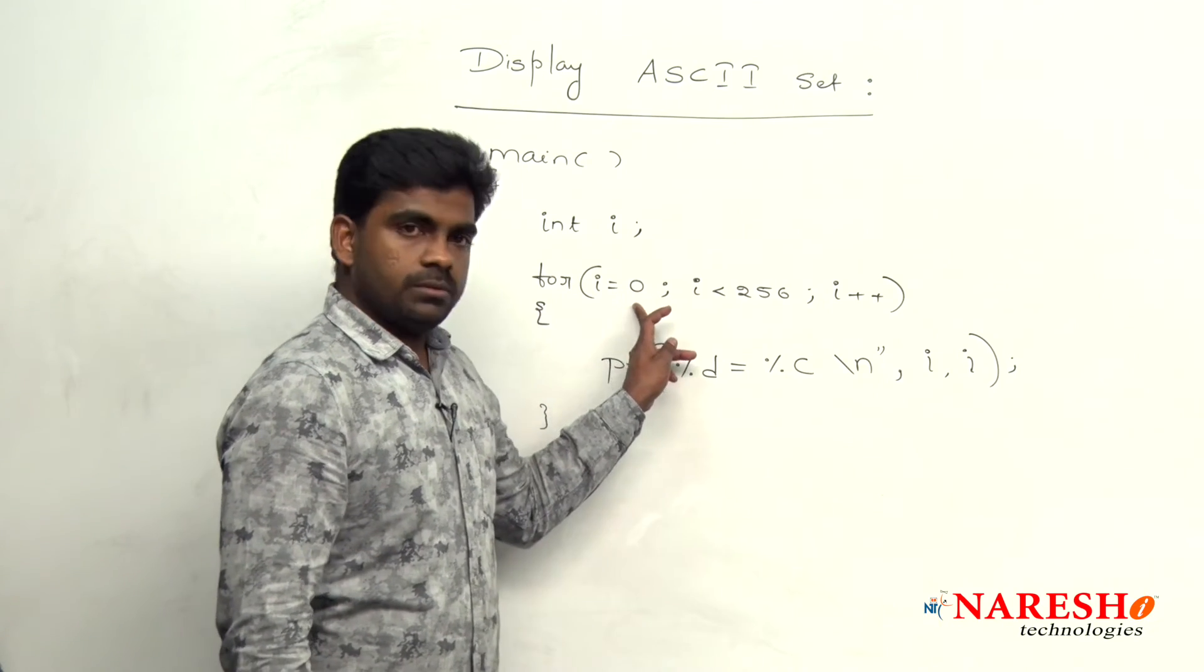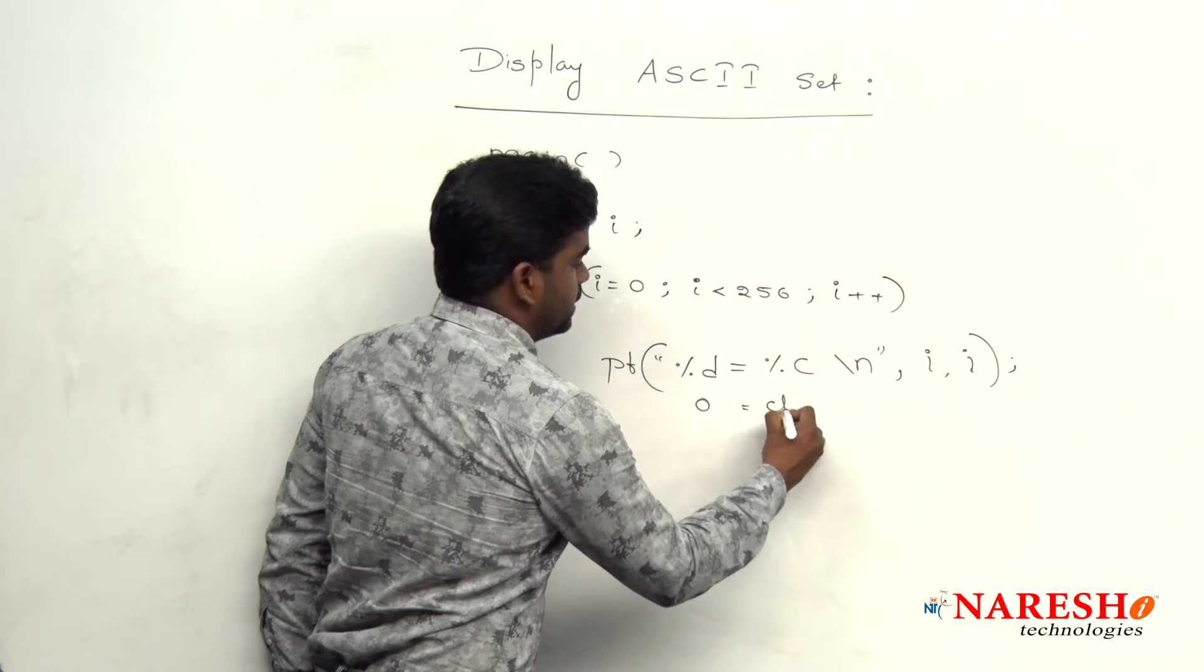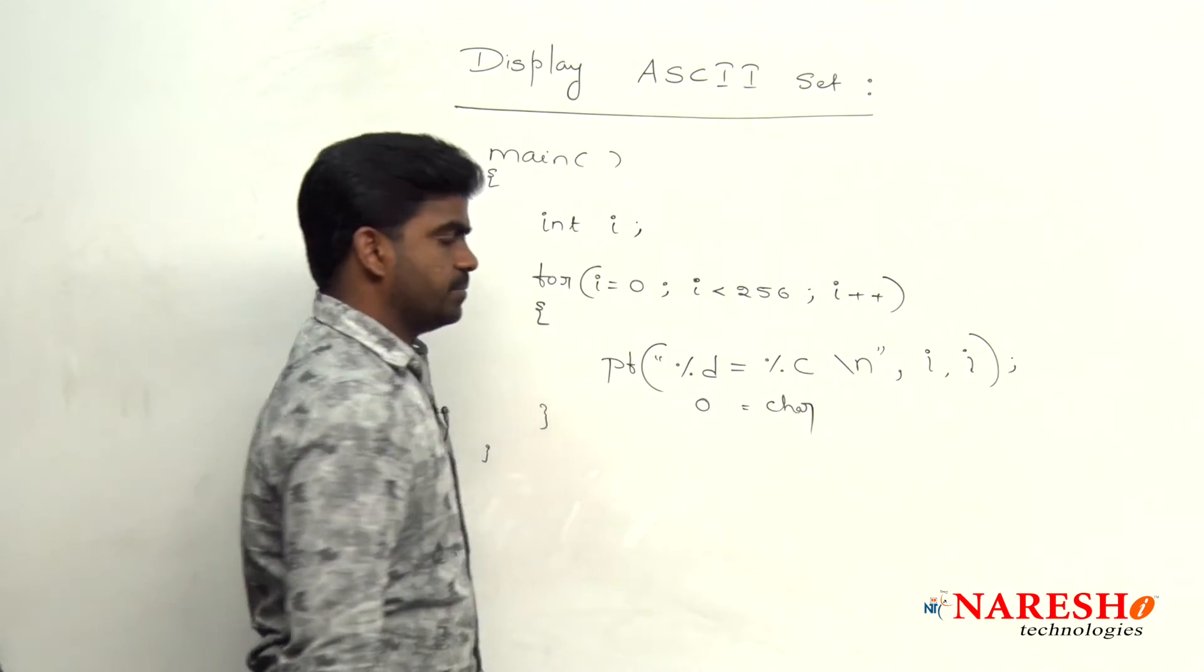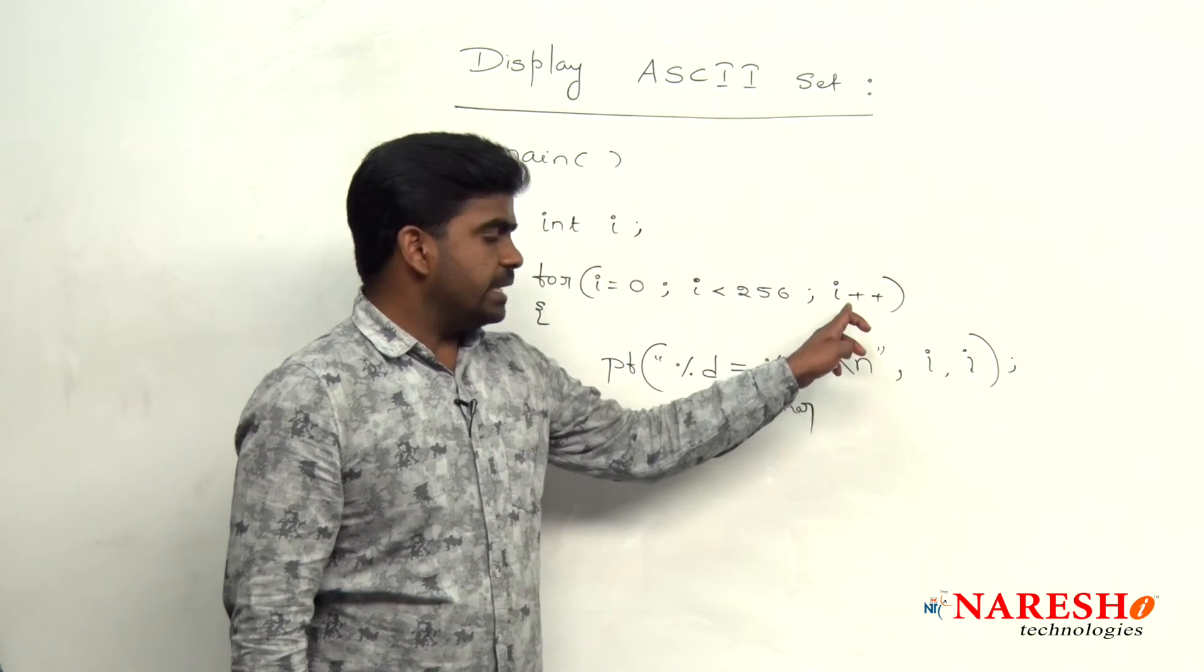First 0, that 0 corresponding character it will display the symbol anything. Next that loop increments.